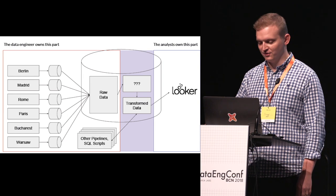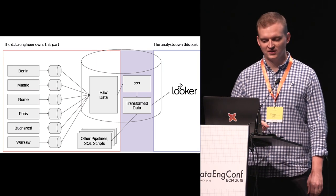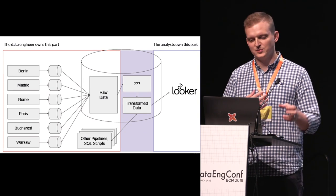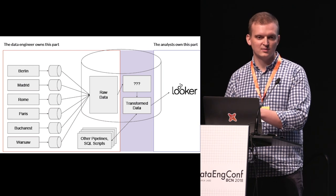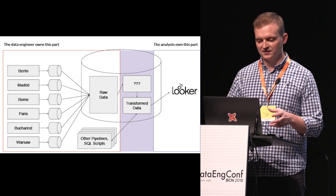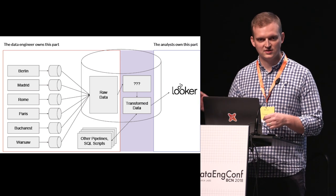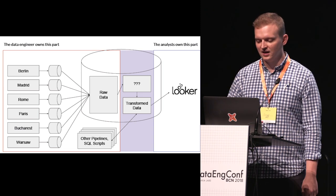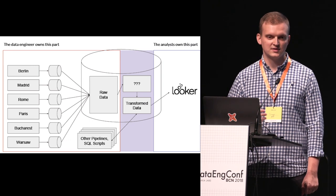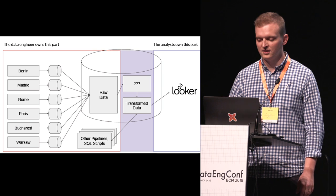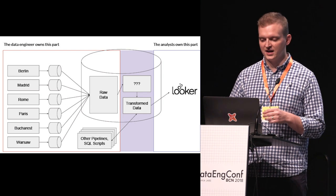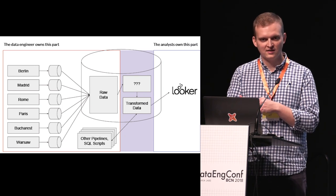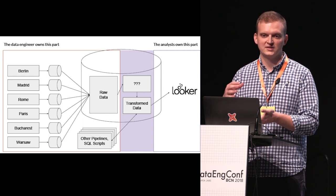This is our reimagined vision of how this world looks. There's still a part the data engineer owns where data gets read out of source systems, passed through pipelines, and written into raw data schemas in the warehouse. But then there's something else that the analysts own — the raw data passes through it to produce transformed data, all inside the warehouse, because that's where analysts are comfortable. That transformed data can then feed into Looker and all the other processes. The data engineers collaborate by providing the platform, but analysts are actually the ones doing most of the implementation of SQL code.